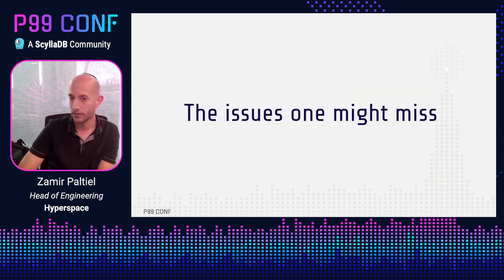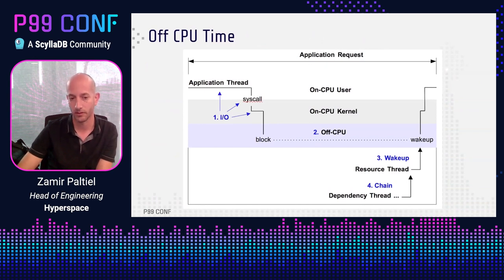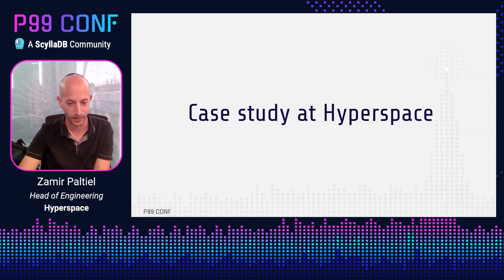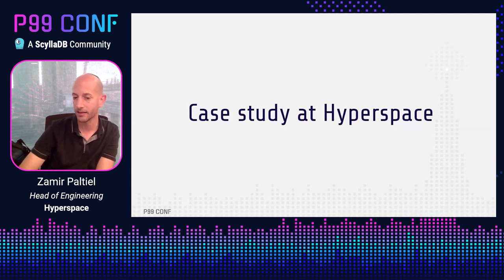But there are some issues that one might miss when using CPU profilers. The most significant ones are off-CPU time. Say your application performs some I/O or locks on a mutex — it calls a syscall, then the CPU sleeps, and CPU profilers won't measure the time the CPU is not active. They will only measure time before and after when the thread wakes up. I want to show you how to measure this off-CPU time using a new methodology, through a case study we had at Hyperspace.